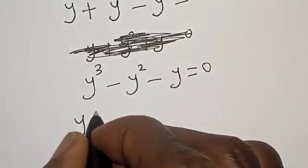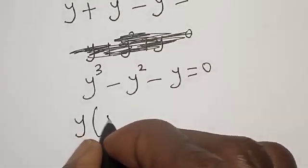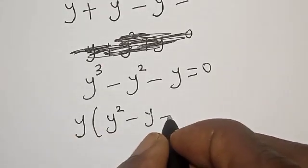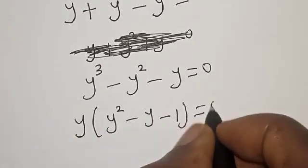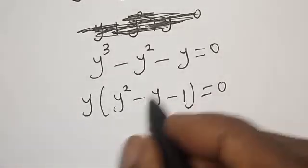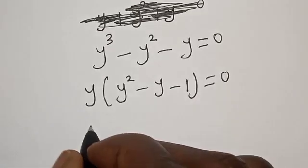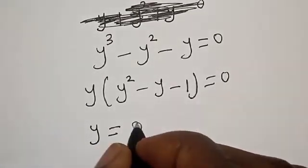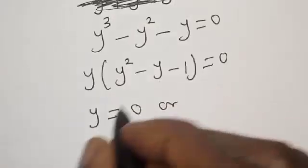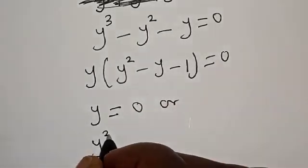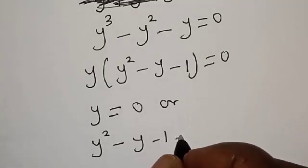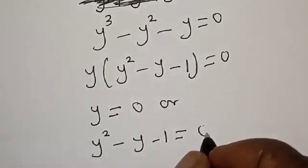We have y times the quantity y squared minus y minus 1, equal to 0. From here, we have two cases: y is equal to 0, or y squared minus y minus 1 is equal to 0.